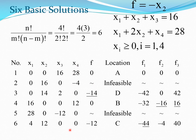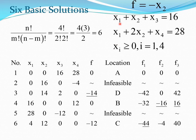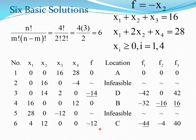Continuing through all cases, consider the last one where X3 and X4 are both 0, giving two equations: X1 plus X2 equals 16, and X1 plus 2X2 equals 28. Subtracting gives X2 equals 12, and then X1 equals 4. Therefore F equals minus X2 equals minus 12. In total, six basic solutions are obtained, of which two are infeasible, leaving four basic feasible solutions.